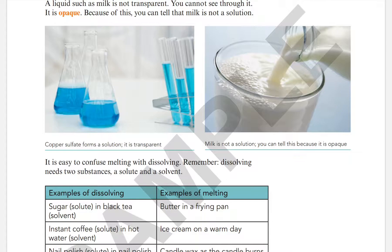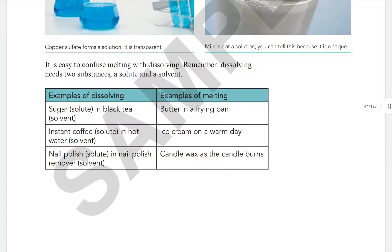Examples of dissolving: sugar in black tea — black tea is the solvent; instant coffee in water — coffee is the solute and water is the solvent; nail polish in nail polish remover — nail polish is the solute and nail polish remover is the solvent. Examples of melting: butter in a frying pan, ice cream on a warm day, candle wax as a candle burns — these are melting, not dissolving.